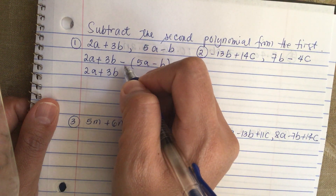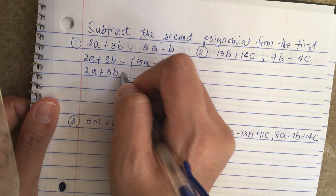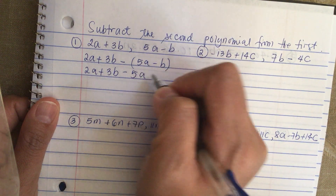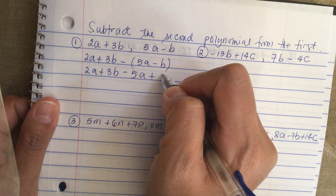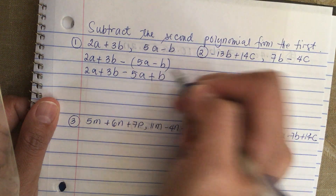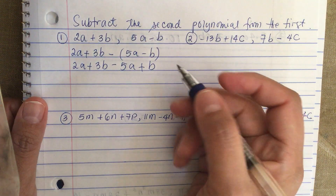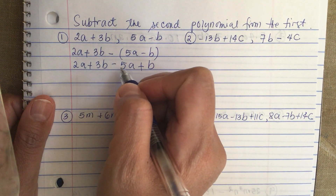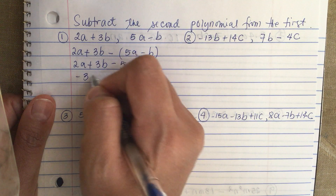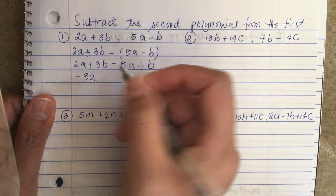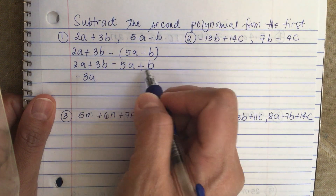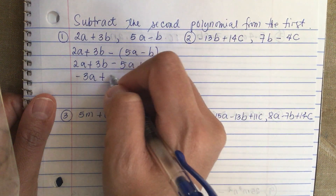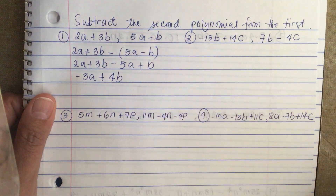We distribute this minus sign inside the parenthesis, so we have minus 5a plus b. Then we combine like terms: 2a minus 5a is minus 3a. Then we have 3b and 1b here for a net of 4b.